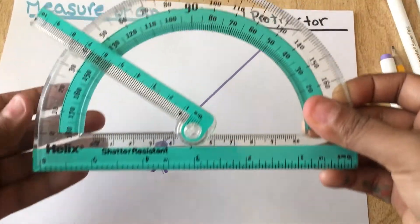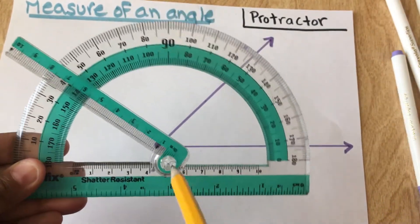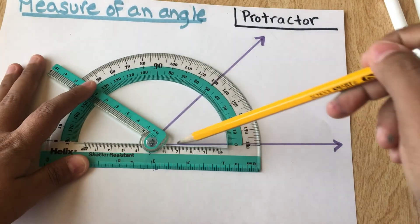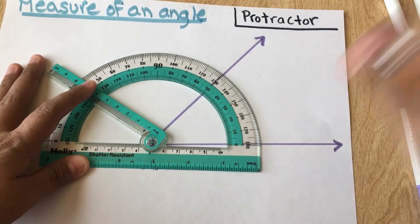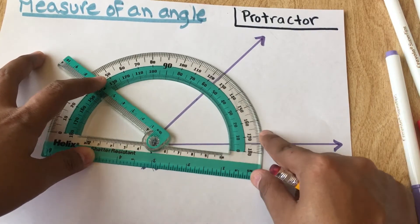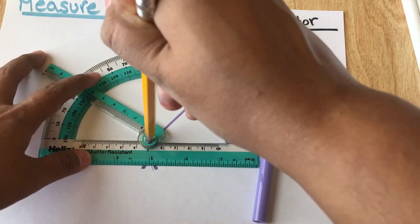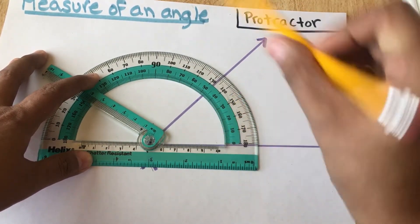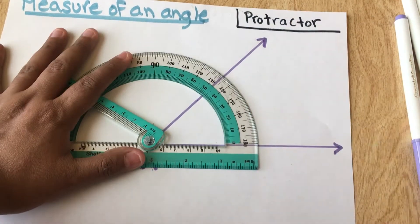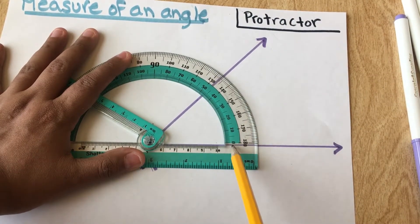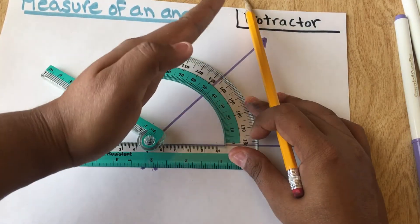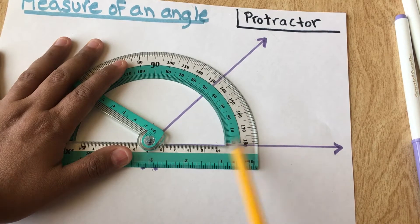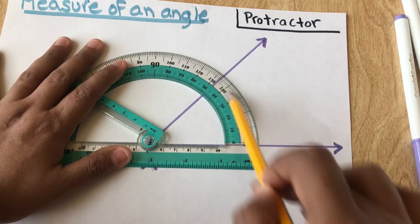So all protractors have the middle, the bottom, have a place where you align the vertex of the angle. And then you want to make sure that the side, the bottom side here, is aligned. This is not correct, so I'm going to line it like this. So again, this is the vertex, and then you could see that the purple is aligning nicely with the angle. Okay, and because it's opening from the right to the left, so it's opening like this, then I want to look at the bottom.